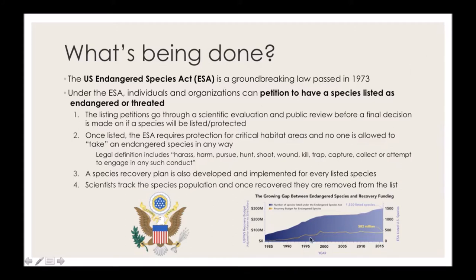However, there is a growing gap between the number of listed species and the amount of money spent per year funding the recovery plans for those species. While we are listing many species, we're not increasing the budget proportionally. We need the budget to follow the trend of how many species are listed — otherwise, there won't be enough funding to make sure those species are getting the protection they need.